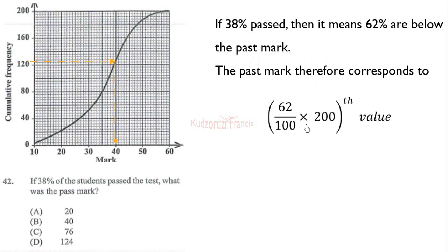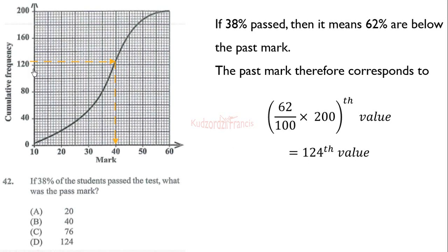62 over 100 times 200 gives us 124. Each box on the graph represents 4, so from 120 we move only one box, then trace to the cumulative frequency curve and downwards. That gives us the pass mark of 40.